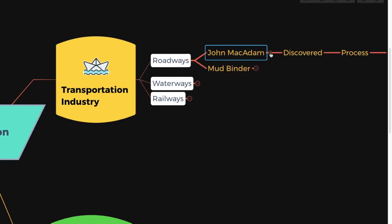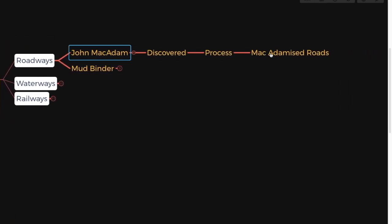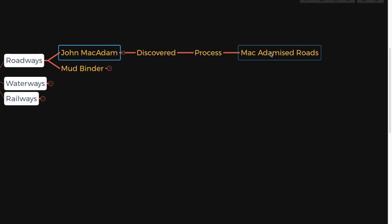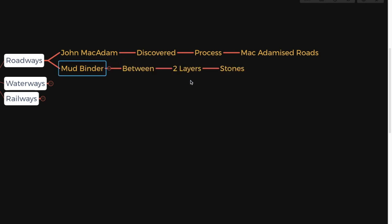John McAdam discovered a process of macadamized roads. What used to happen is he used a mud binder between two layers of stones. Mud was later on replaced with tar. What about the waterways?